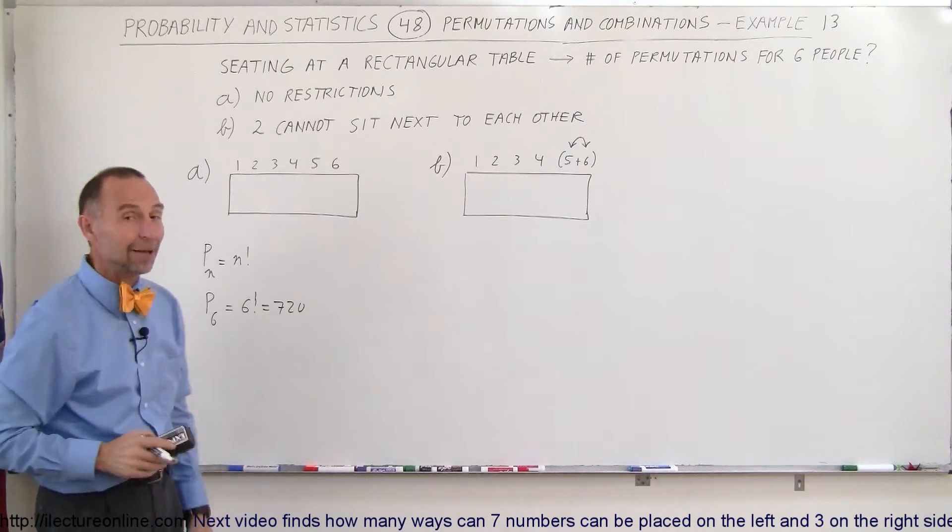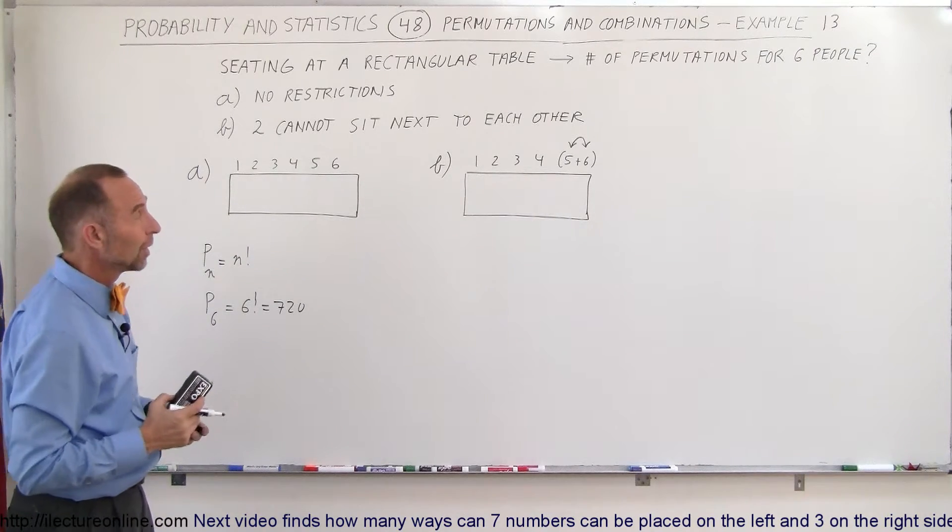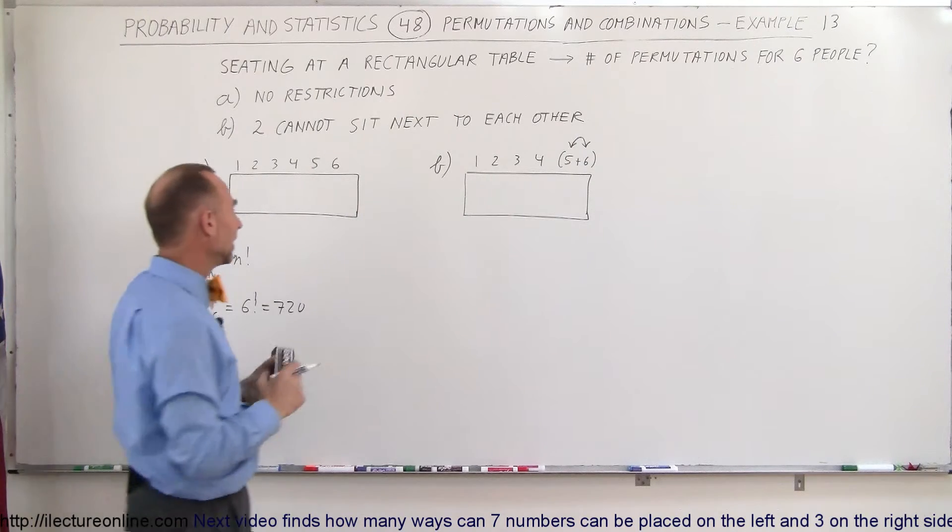Which is equal to 720 ways in which six people can sit at a table like that. That's an amazing number, but there's a lot of different ways they can be arranged. But what if there's a restriction where two cannot sit next to each other?